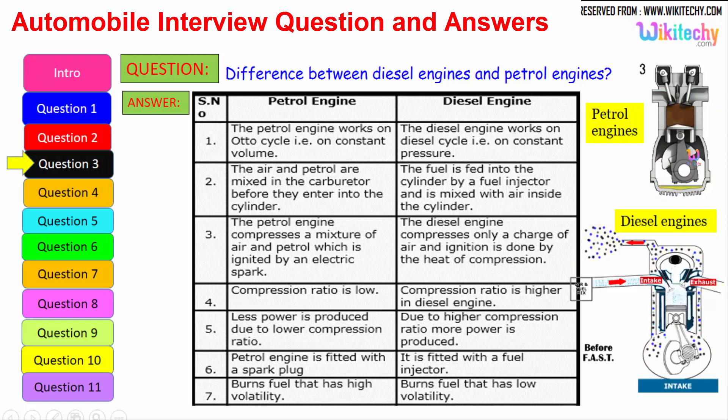The diesel engine compresses only a charge of air and ignition is done by the heat of compression. Here the compression ratio is low whereas the compression ratio is higher. Less power is produced due to lower compression ratio, higher compression ratio produces more power. Petrol engine is fitted with a spark plug, it is fitted with a fuel injector. It burns fuel with high volatility. The petrol is highly volatile whereas here it burns the low volatility liquid also. Diesel is a low volatile liquid. These are some of the differences between petrol engine and diesel engine.